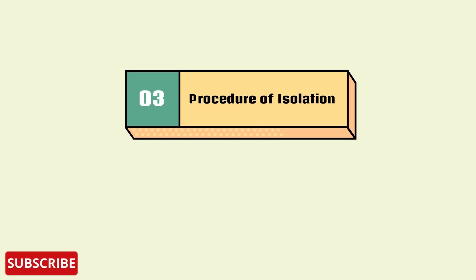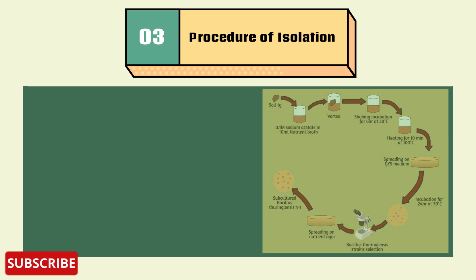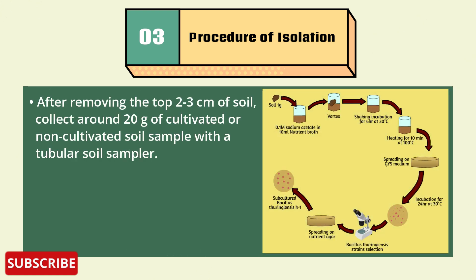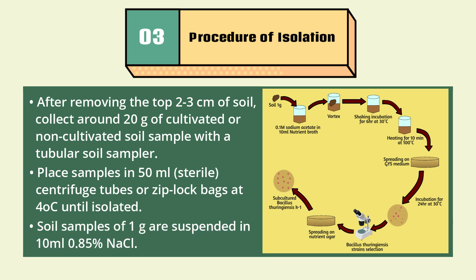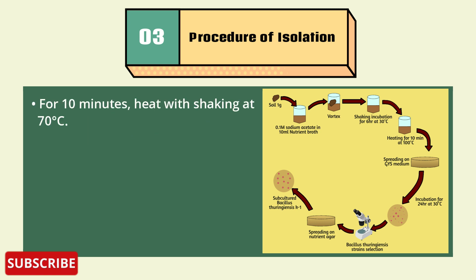With the help of this diagram you will understand the procedure. After removing the top 2–3 cm of soil, collect around 20 grams of cultivated or non-cultivated soil sample with a tubular soil sampler. Place samples in 50 ml sterile centrifuge tubes or Ziploc bags at 4°C until isolated. Soil samples of 1 gram are suspended in 10 ml of 0.85% NaCl, then heated with shaking at 70°C for 10 minutes.